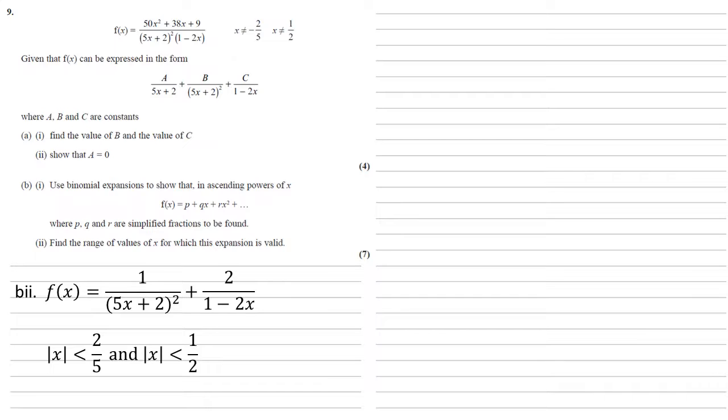So for the whole expansion, we need to find the x value that will fit into both of these inequalities. Well, 2 fifths is the smallest of them, that's the strongest inequality, so the range of values for f of x is the modulus of x is smaller than 2 fifths.